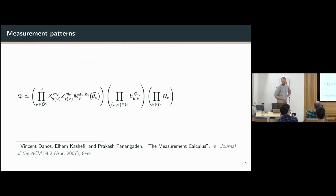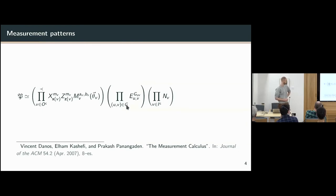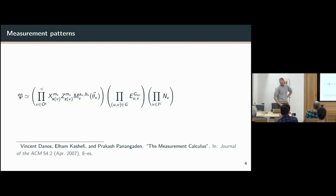Moving on to the measurement calculus for qdits: in this model any measurement pattern can be reduced to the following form. First, initialize a set of qudits in a generalization of the |+⟩ state. Then do CZ operations to entangle these prepared states with input states. Then perform an ordered sequence of measurements and Pauli corrections used to correct for undesired measurement outcomes.